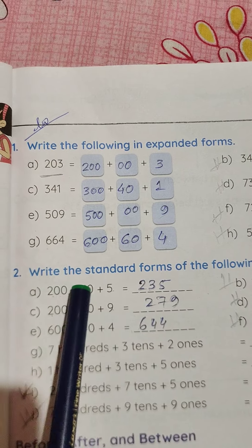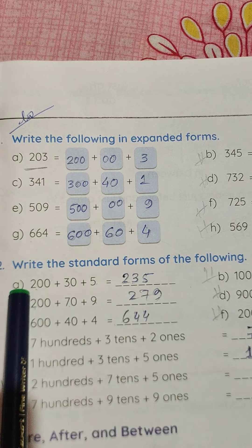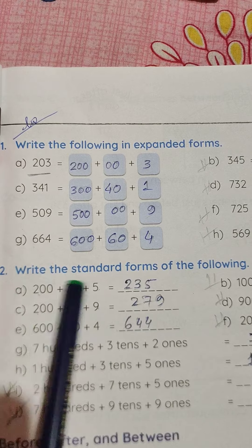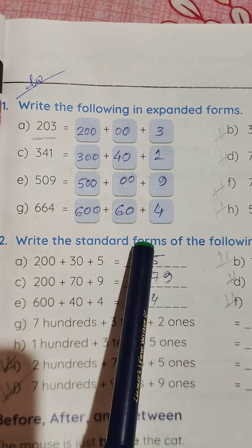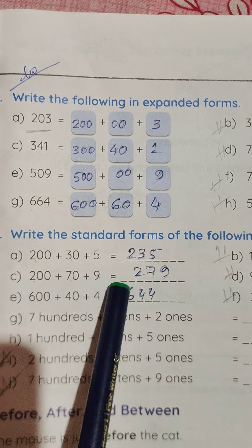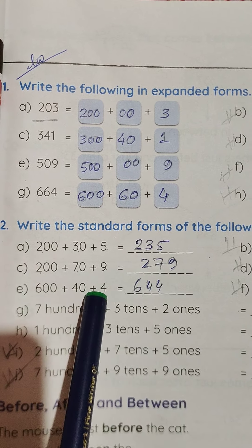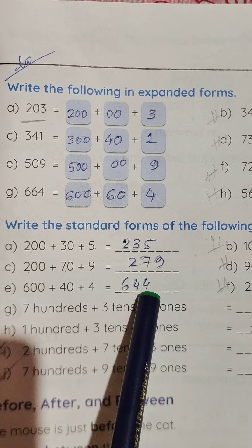Do this. Write the standard forms of the following. Here, the numbers are given in expanded form. You have to write in standard form. It will be 235, it will be 279, and it will be 644.